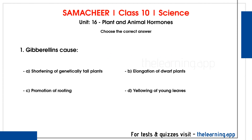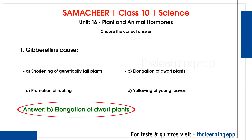First question: Gibberellins cause dash. Options are A) Shortening of genetically tall plants, B) Elongation of dwarf plants, C) Promotion of rooting, D) Delaying of angles. The correct answer is option B, elongation of dwarf plants. There are 5 types of plant hormones: auxins, cytokinins, gibberellins, abscisic acid, and ethylene. Auxins, cytokinins, and gibberellins are plant growth hormones.